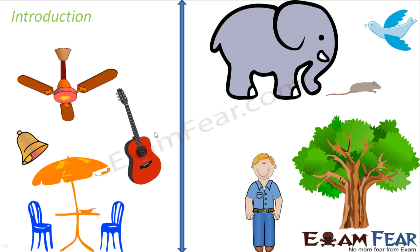Not only breathing, but there are many other processes which take place inside our body, and because of those processes, we are actually living. Living organisms exist because there are so many processes happening inside them. Can a living organism live without any food? No — if we stop eating, we start becoming weaker and weaker, and gradually a day will come when we will not be able to stay alive. So why do we need food? Because there are so many things happening inside our body, and for that we need energy. We get that energy from food. So these processes taking place inside the body of any living organism are known as life processes.